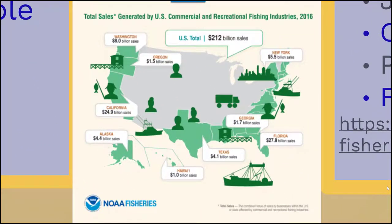Within the United States, at least in 2016, there were approximately $212 billion in sales across marine fisheries around coastal US waters. The largest sales occurred in California with almost $25 billion and Florida with almost $28 billion, but other fisheries in remaining coastal states also contribute to that total. It's interesting how there's such a big hub in California regarding fisheries sales.